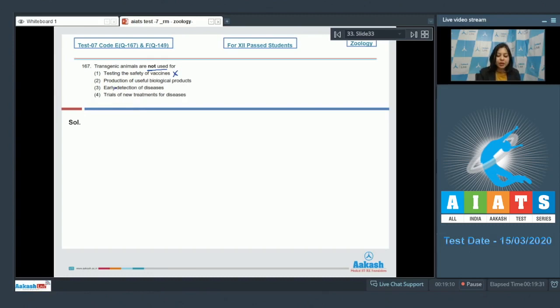Number two, production of useful biological products. This is also incorrect as transgenic animals have been used for the production of alpha-1 antitrypsin, alpha lactalbumin, etc., which are useful biological products.